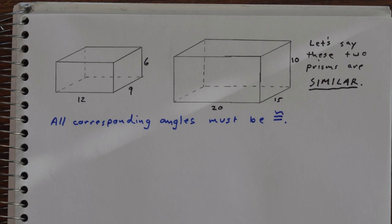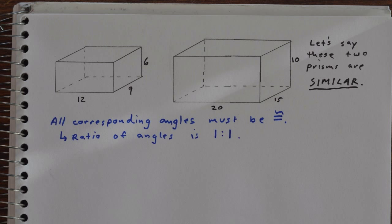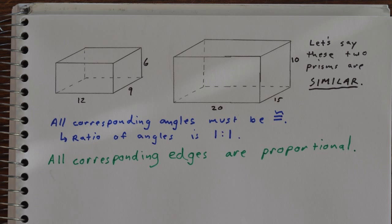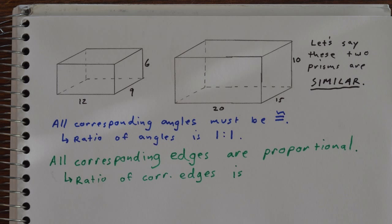Now we know since the prisms are similar, all of the corresponding angles have to be congruent. In other words, the ratio of the angles must be 1 to 1. All of the corresponding edges, or the linear measurements, are proportional.